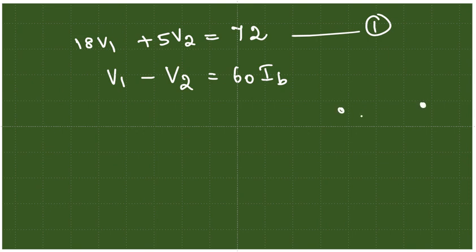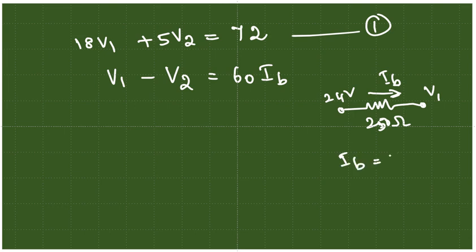We know that Ib is flowing between this 24 volts potential and this V1 potential with 250 ohm resistance. So this is your Ib as given in the problem itself. Ib we have already noted it as 24 minus V1 divided by 250.